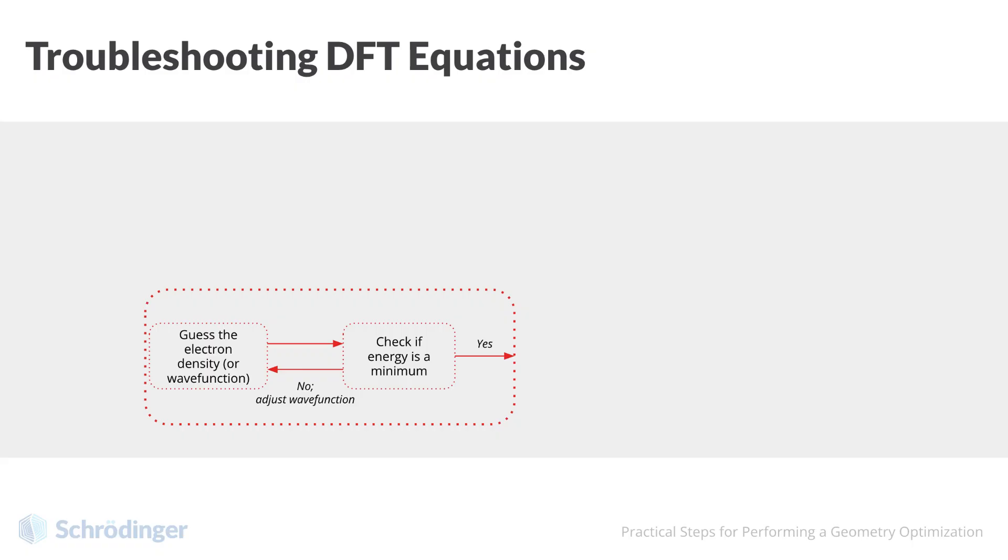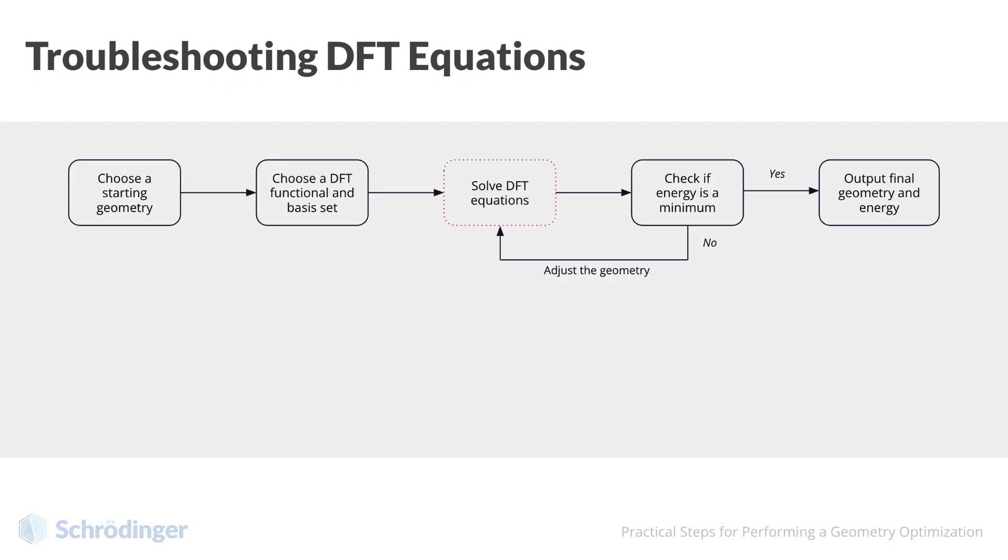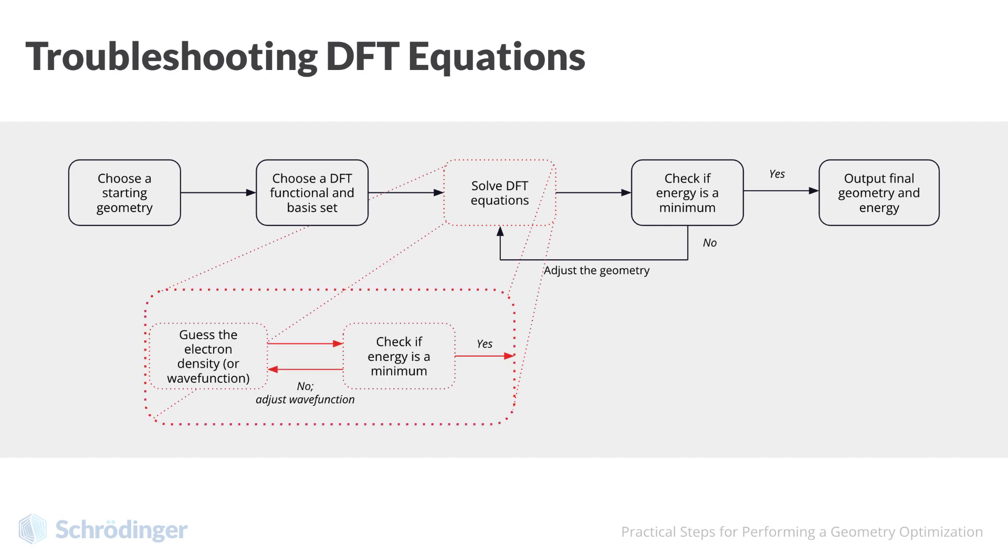The inner iterative process minimizes the energy with respect to electron density for a fixed geometry. This is the solving of the DFT equations. We solve the DFT equations at each geometry step along the optimization. The second outer iterative process minimizes the energy of the molecule with respect to the geometry, or the 3D coordinates of the atoms. This is the geometry optimization itself. We can say that the task of solving the DFT equations is embedded in the geometry optimization. There are two iterative processes, and if something goes wrong in either of them, our geometry optimization is not going to succeed. It is important to learn to troubleshoot the most common pitfalls in either solution of the DFT equations or in the geometry optimization process.